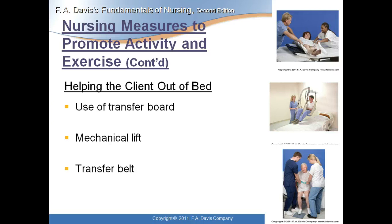Nursing measures include helping the client out of bed. A mechanical lift, which many hospitals are now adopting, saves the nurse's back since nurses often don't use great body mechanics anyway. The transfer board acts as a bridge between the bed and the gurney. The mechanical lift and the transfer belt — which goes around the patient's waist and is used to help them stand — are key tools for safe transfers.